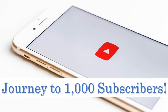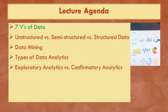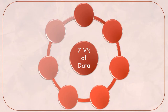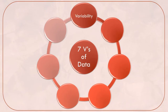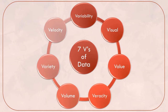So let's talk about the seven V's of data. There are seven V's when it comes to data: variability, visualization, value, veracity, volume, variety, and velocity.